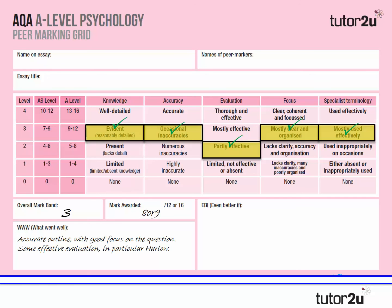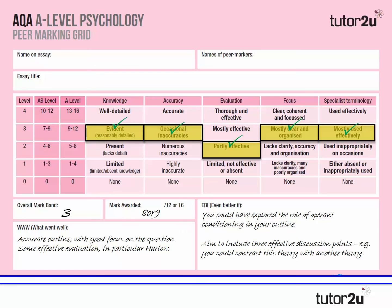We can use this to say what went well: it was an accurate outline, a good focus on the question, and there was some effective evaluation — in particular the Harlow point. In terms of what could improve it, it would have been even better if they'd explored operant conditioning in the outline to get more knowledge. They could also have included three effective discussion points and possibly contrasted this theory with another, like Bowlby's theory — so there were different ways they could have picked up more evaluation marks.